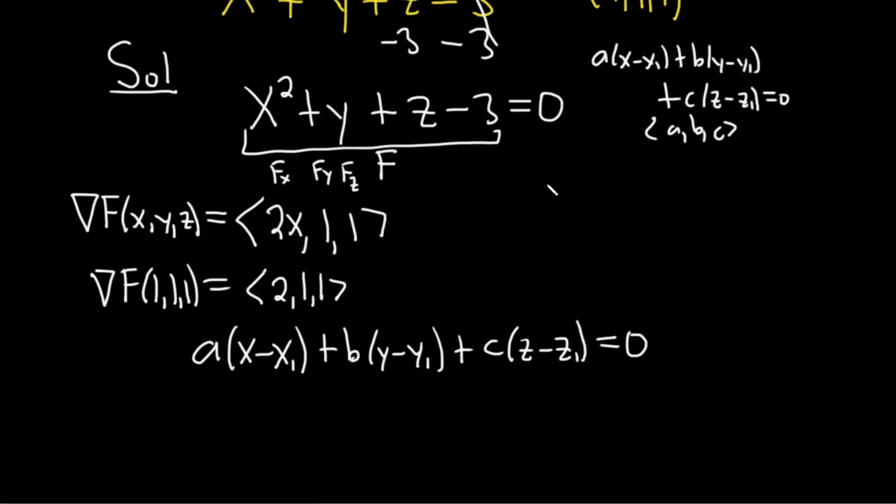Now we just plug everything in. Our point is 1, 1, 1. So x1, y1, and z1 are all 1s. This will be 2 times x minus 1 plus 1. This is our a, our b, and our c. y minus 1 plus, and then c is also 1. And then that's z minus 1. And that's all equal to 0.